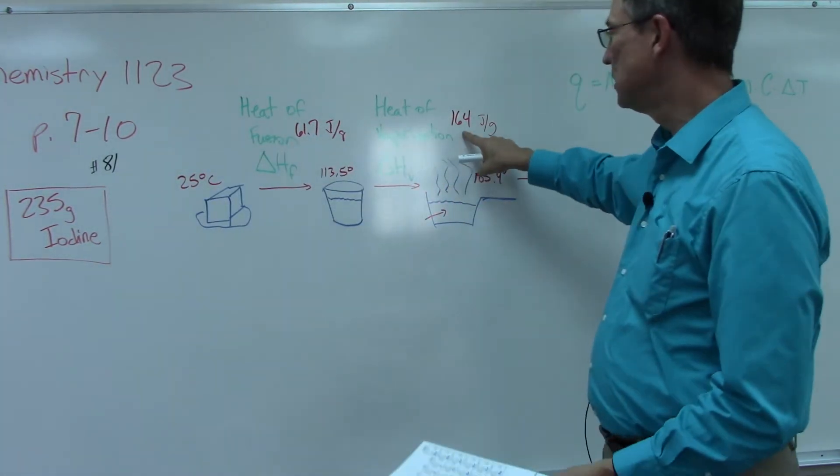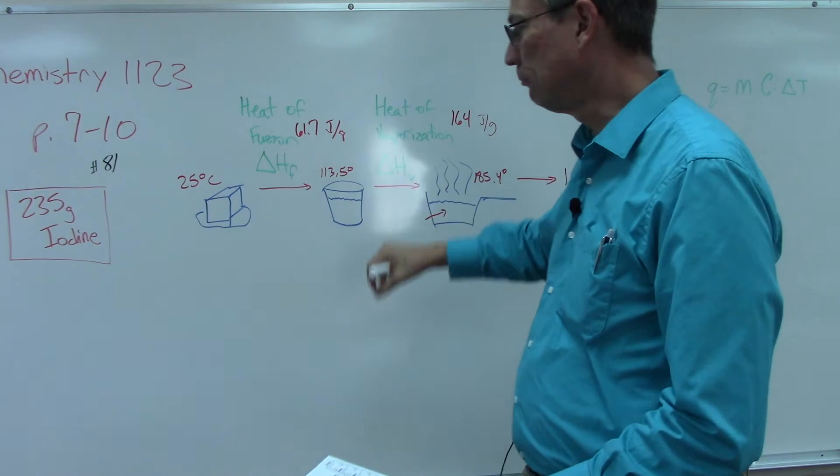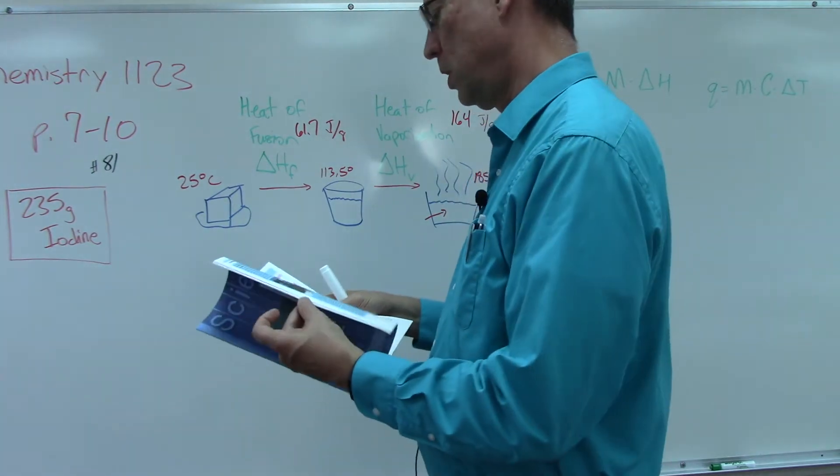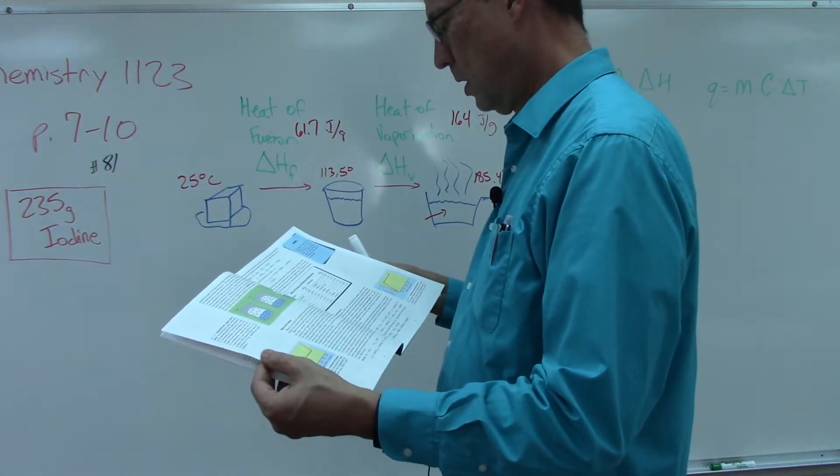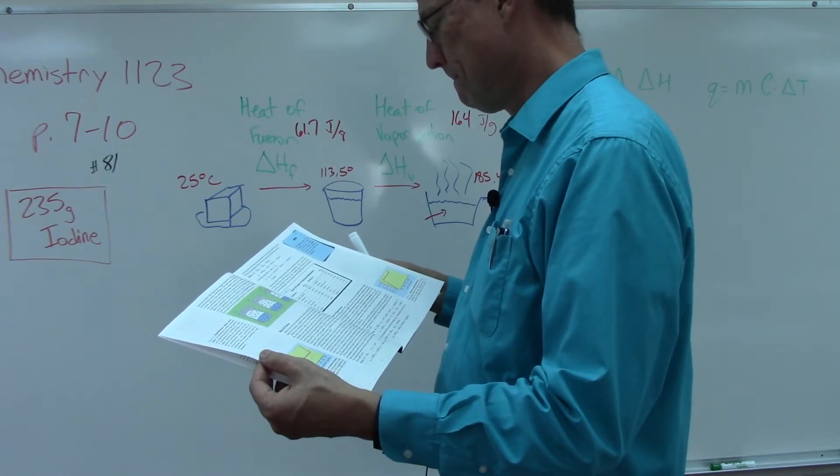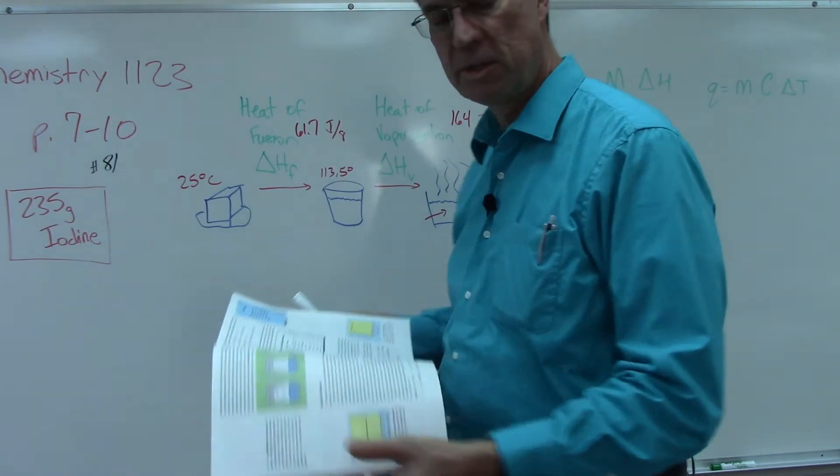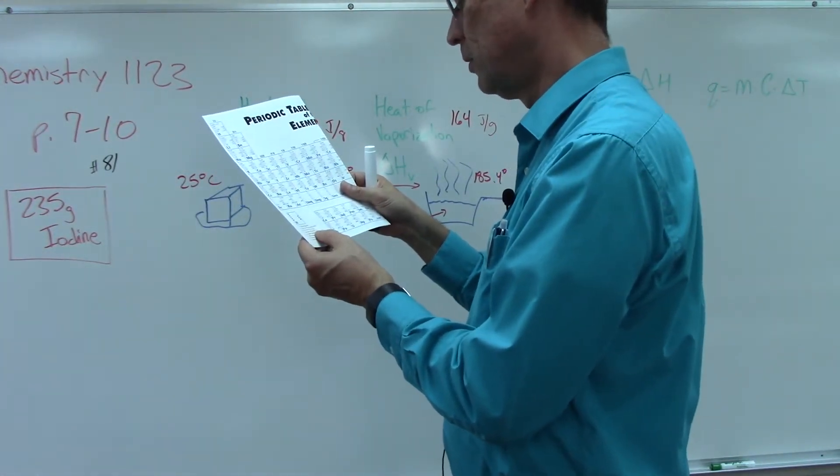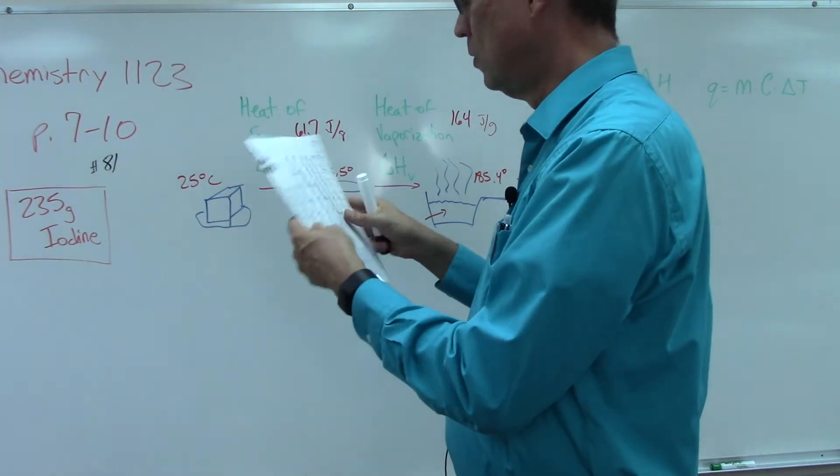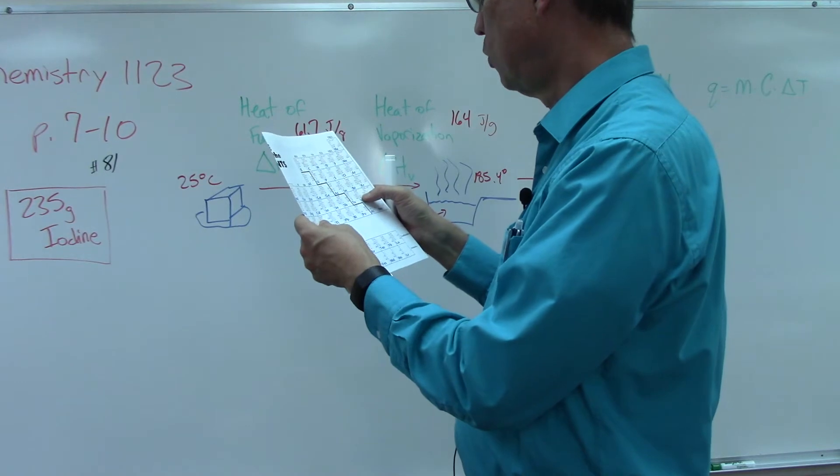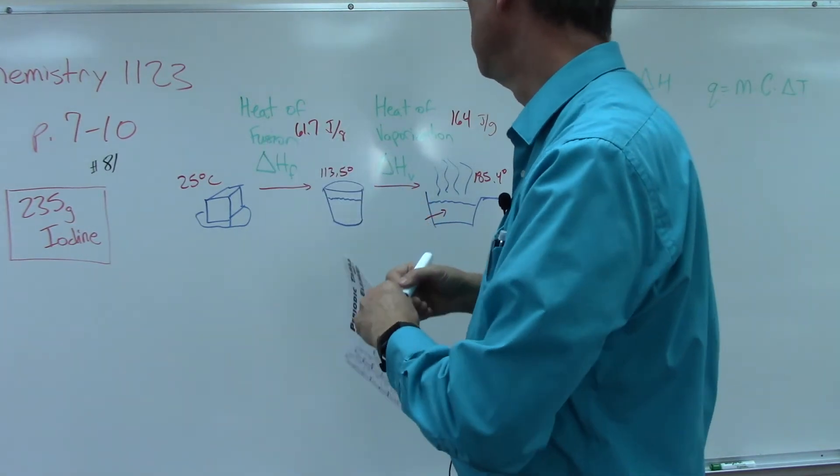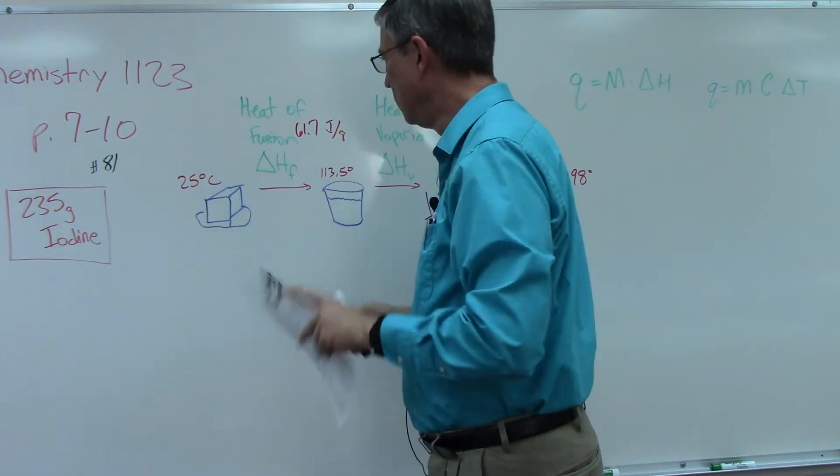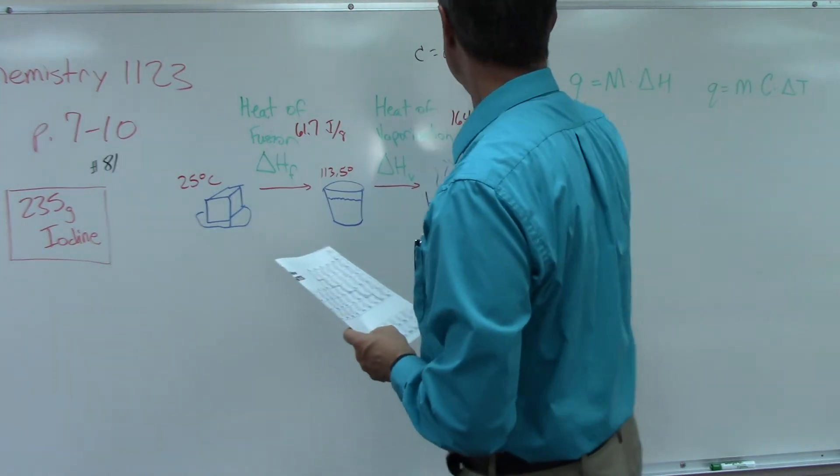We need to know the specific heat. The specific heat is the fourth number, so one, two, three, four: 0.214. That's our C when we have to do C over here.